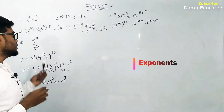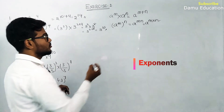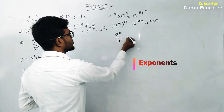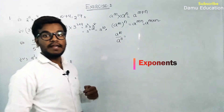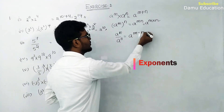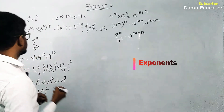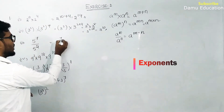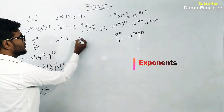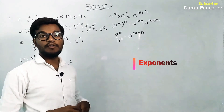Next question: 5 power 7 by 5 power 2. Bases are same, so we use the formula a power m by a power n equals a power m minus n. So 5 power 7 minus 2 equals 5 power 5.